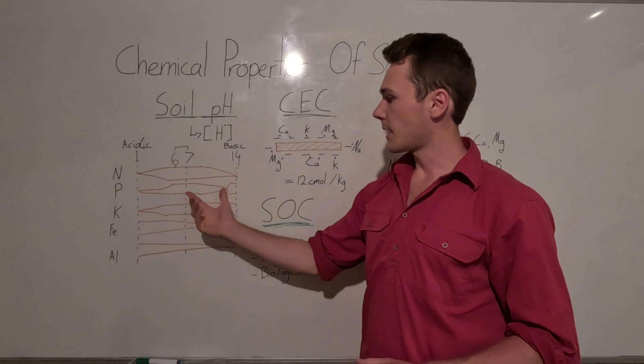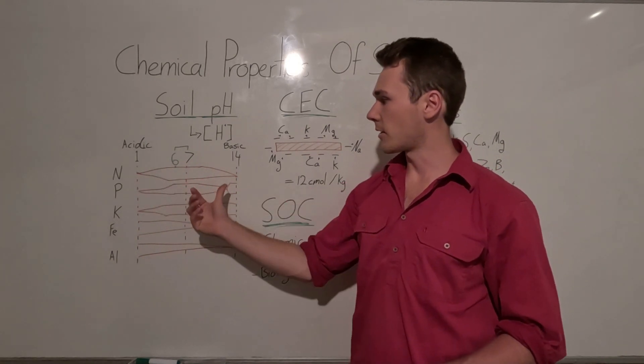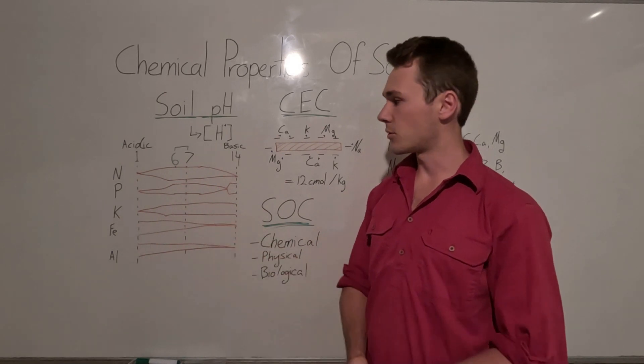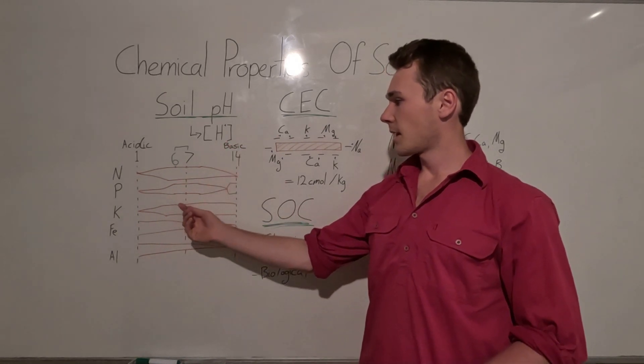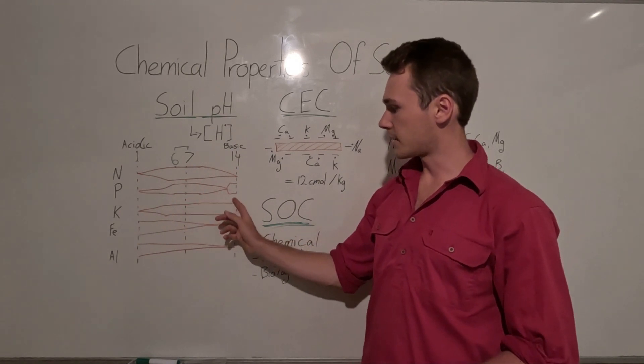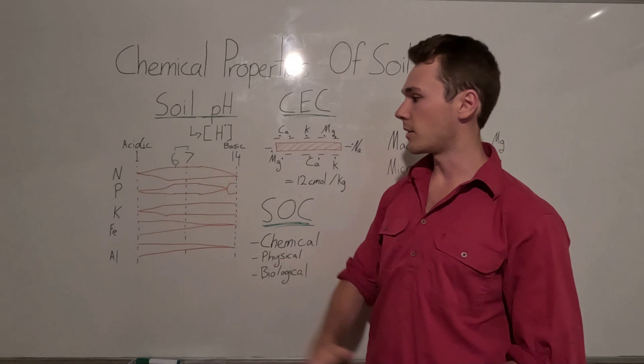So nitrogen for example is pretty abundant around the seven, which is neutral, but once you go to either end of the spectrum the availability starts to decrease. It's interesting because phosphorus is similar but it spikes here at the end, so the thickness of these lines represent the availability of that nutrient.